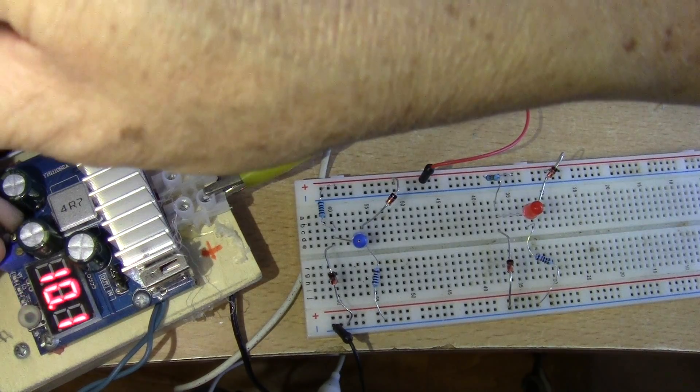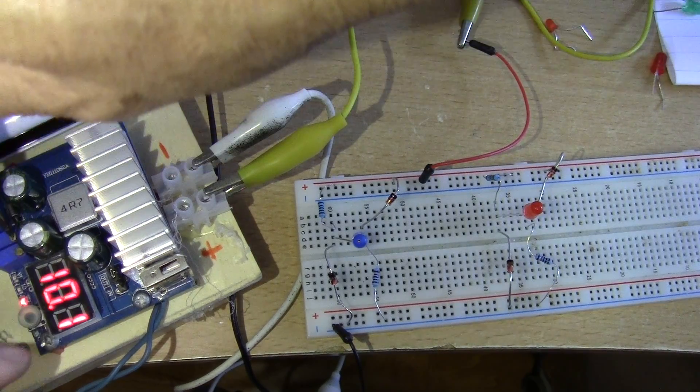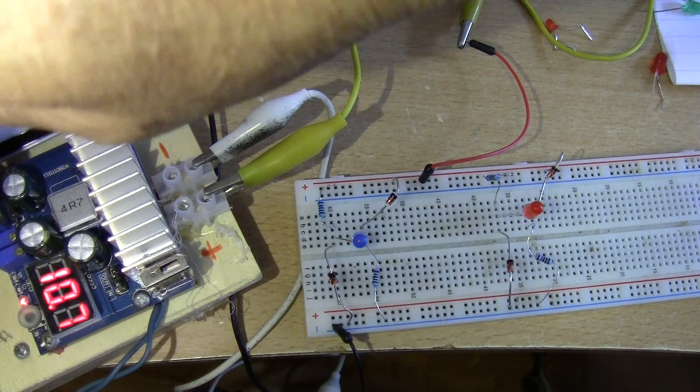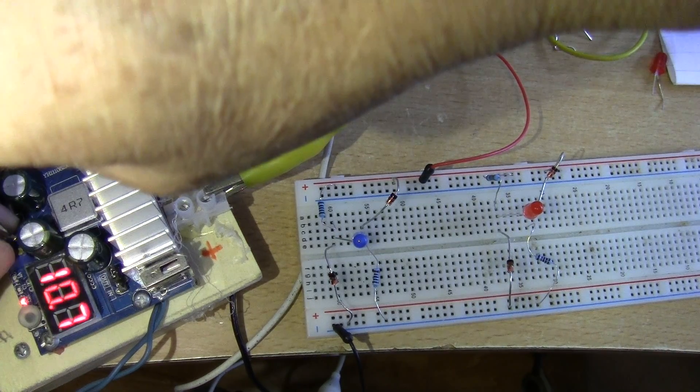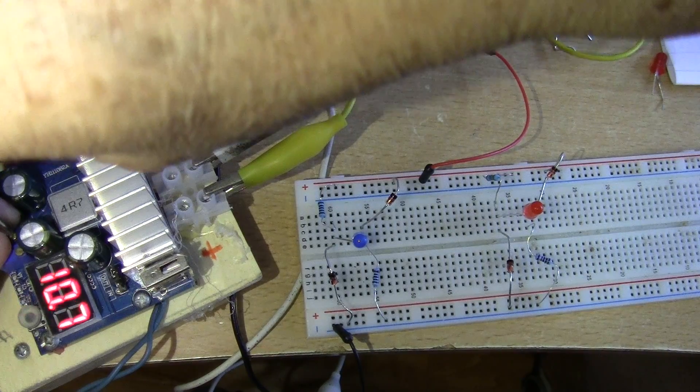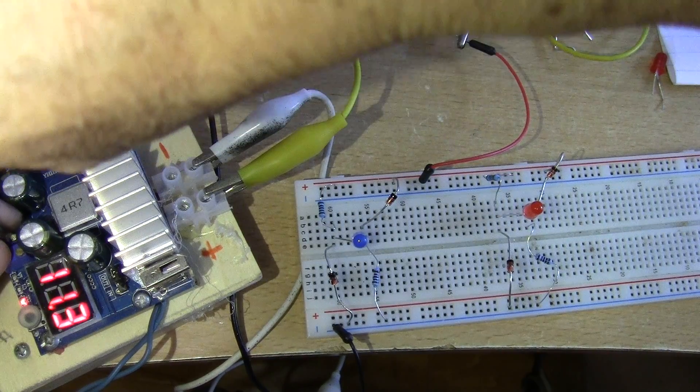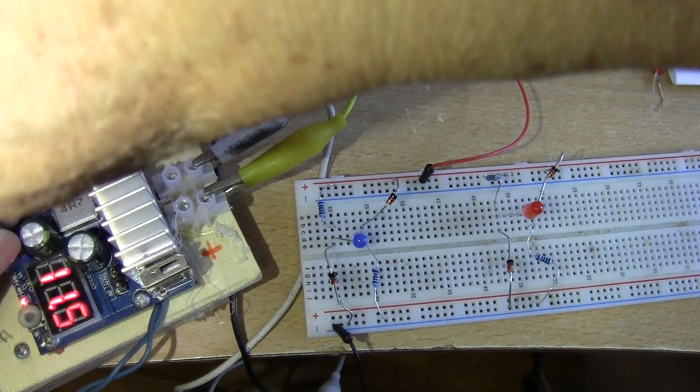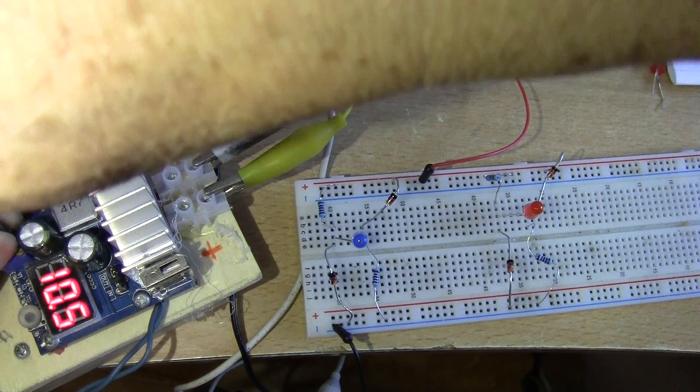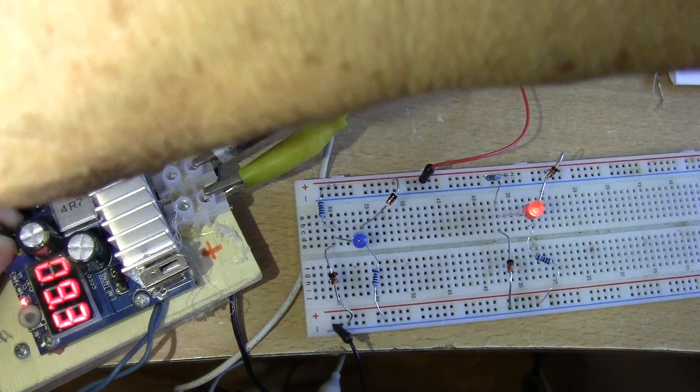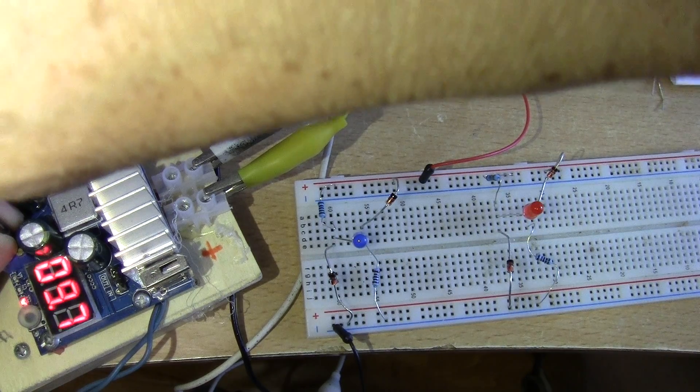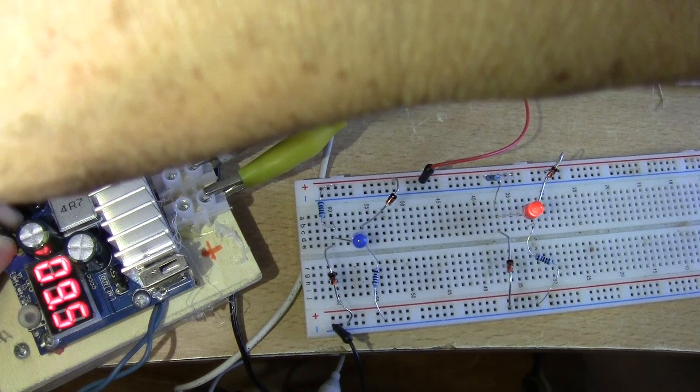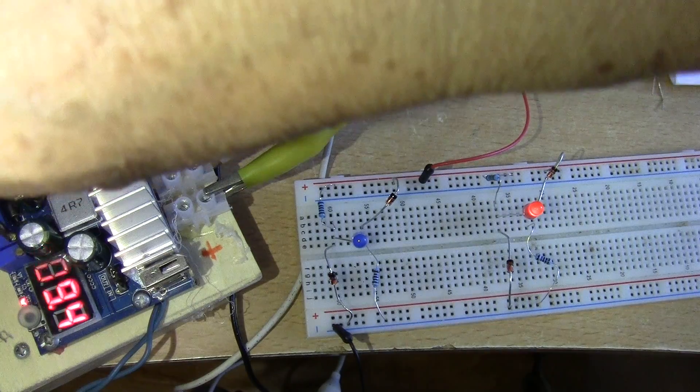I'm going to turn the power. This is 10V. Anything that is above the voltage I just mentioned, the LED would be off. It's like 11, 12. So I'm going back down. You see here, 9.6V, 9.5V is just turned on.